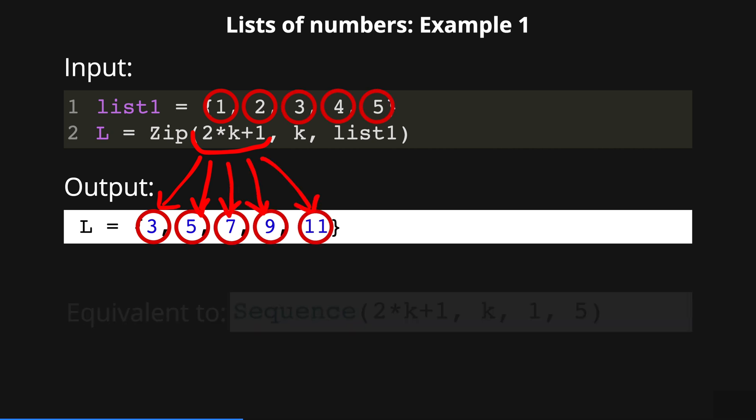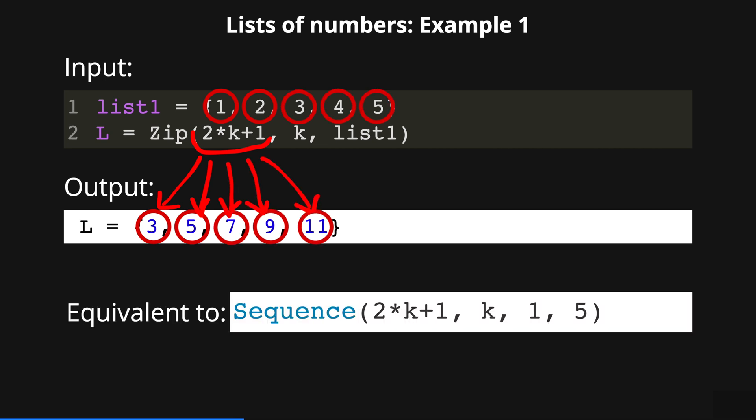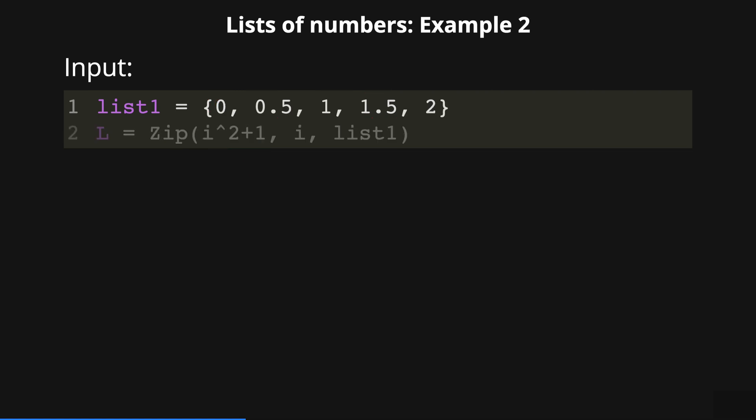Of course we can use the sequence command to obtain the same result. In that case we need the expression 2k plus 1 where k is the variable that runs from 1 to 5. Now let's see our second example.